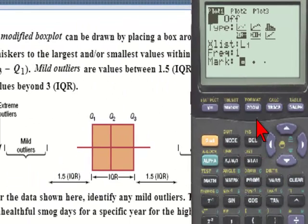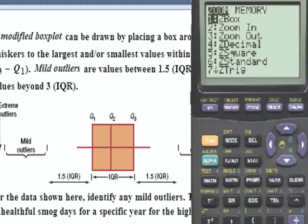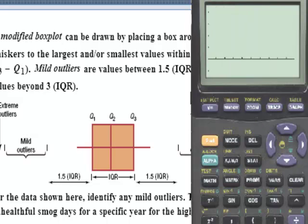To see the box plot, we'll hit the zoom button, then followed by the number 9. And here we see a box plot.